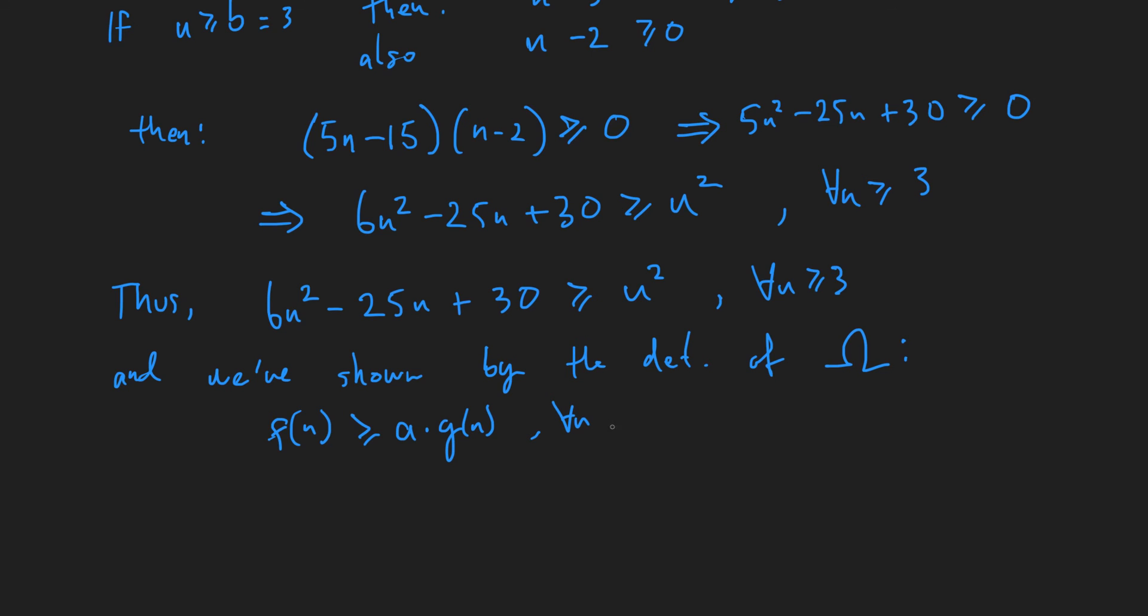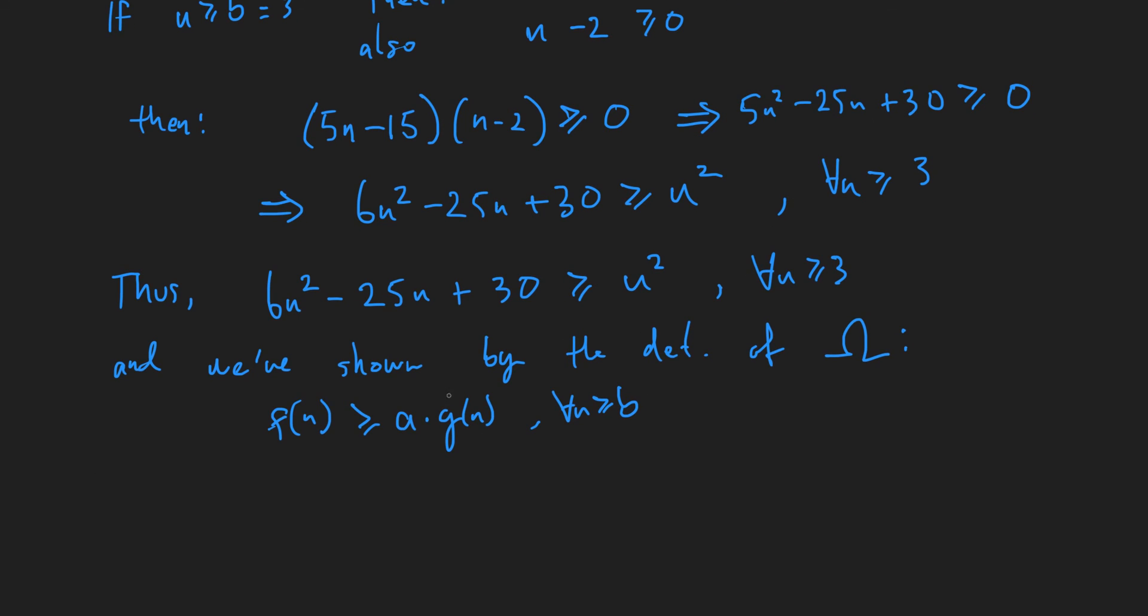where f of n is equal to 6n squared minus 25n plus 30, and g of n is equal to n squared,